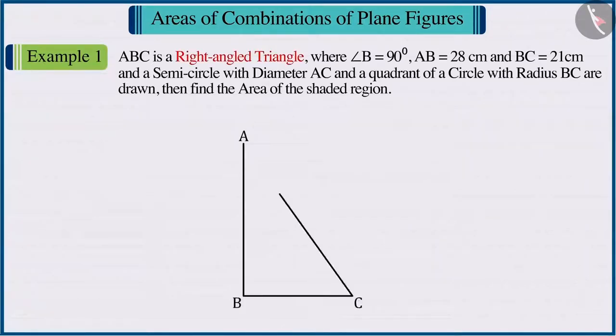ABC is a right-angled triangle, where the measure of angle B is 90 degrees. AB equals 28 cm and BC equals 21 cm.